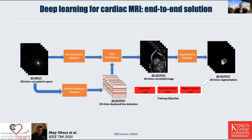We've recently taken this to the next step and extended our network to also perform segmentation — going from corrupted k-space directly to the segmentation. The intermediate steps still perform the reconstruction, data consistency, artifact detection, and then finally the segmentation, but these all feed into one single loss function with a combined training objective. This is quite exciting work because it opens up the avenue for finding end-to-end solutions for poor quality data and other clinical measures you might want to extract at the end of this pipeline.